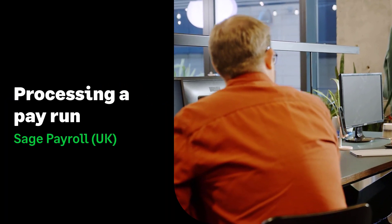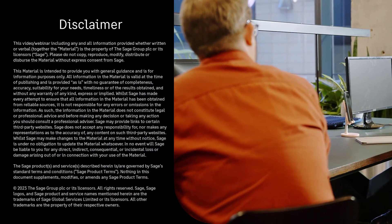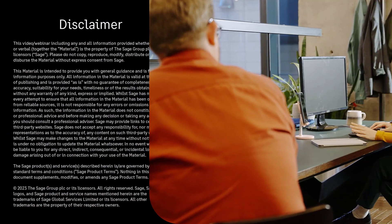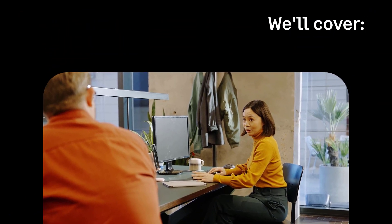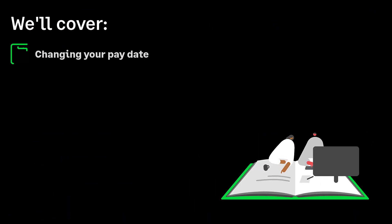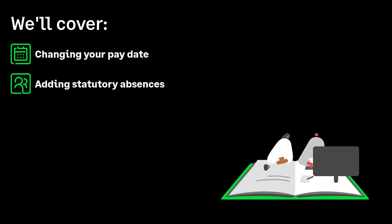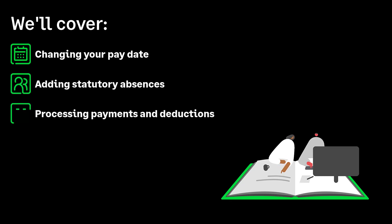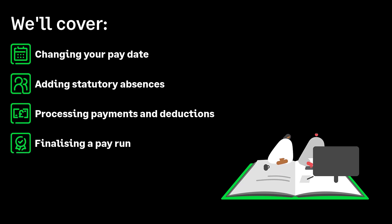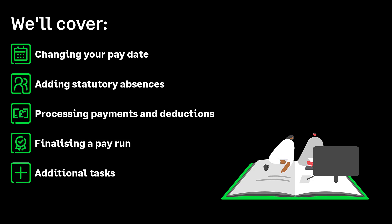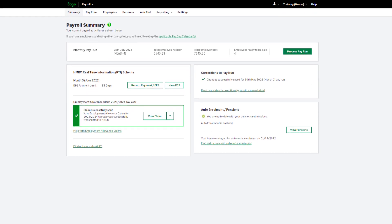Processing a pay run in Sage Payroll. In this video we'll show you how to process your payroll. We'll cover the following steps: confirming and changing your pay date, adding absences such as statutory leave, processing your payments and deductions, and finalising your pay run including sending your full payment submission to HMRC. We will also cover any additional tasks once your payroll has been completed. Let's get started.